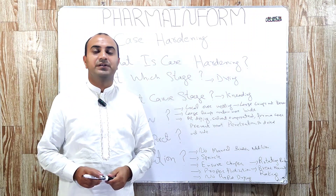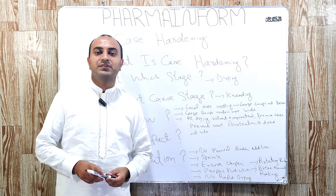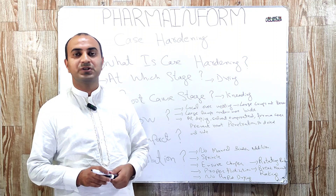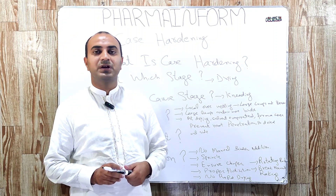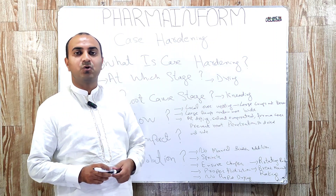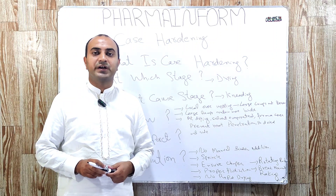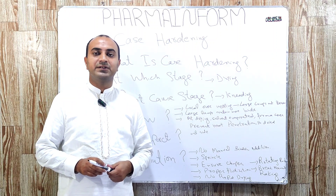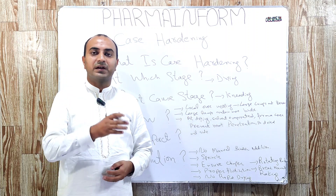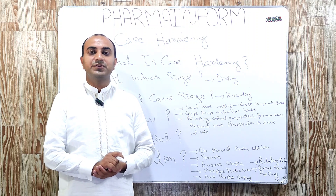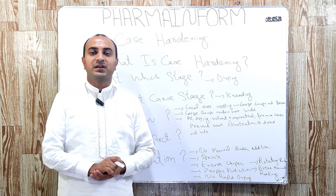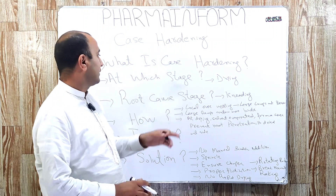What is case hardening? Case hardening is a defect of wet granulation in which the binder is not fully dried and it is entrapped inside the granules. This defect is known as case hardening.